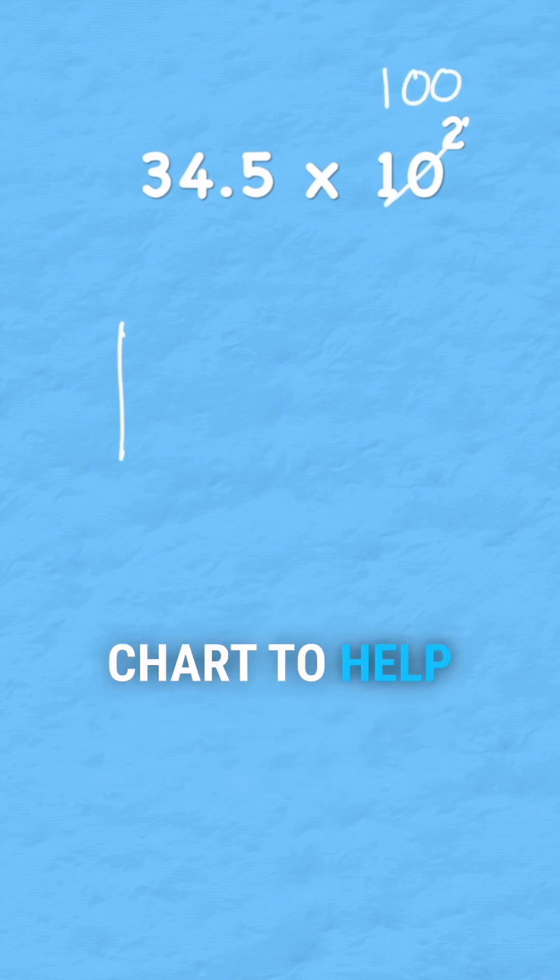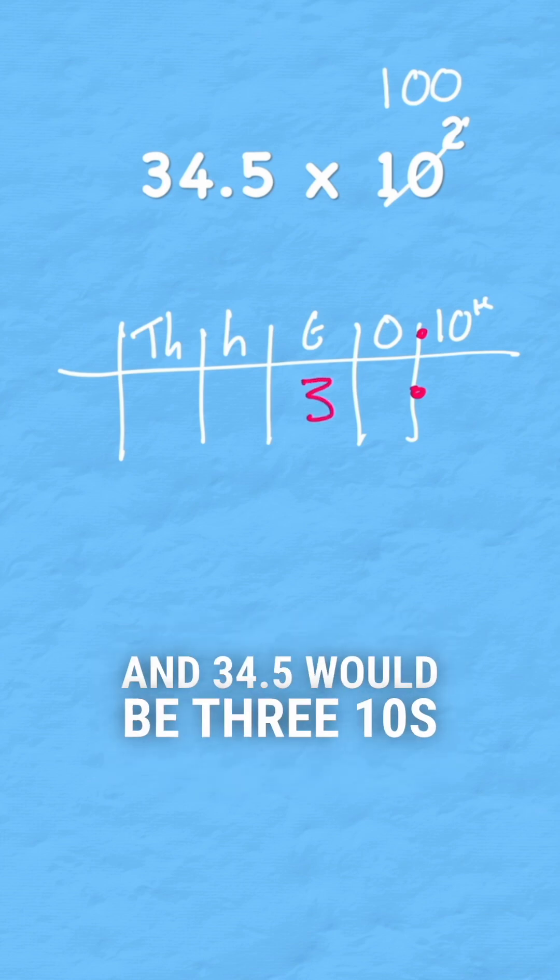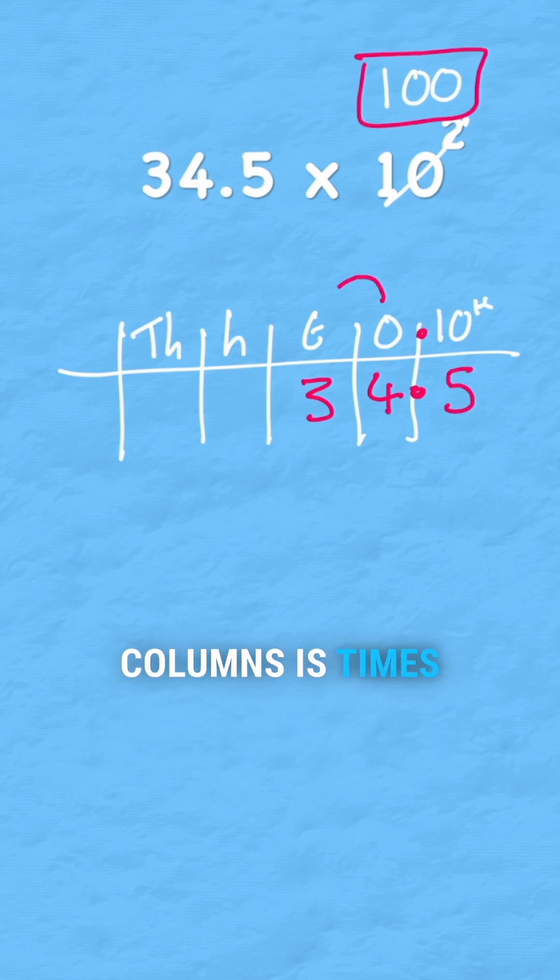Now I could just use my place value chart to help me. I have my tenths, my ones, tens, hundreds, and thousands. And 34.5 would be 3 tens, 4 ones, decimal point, and 5 tenths. I need to know that each of these columns is times 10.